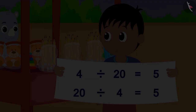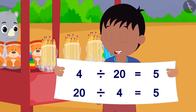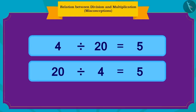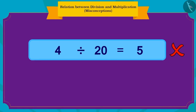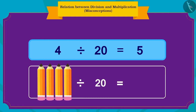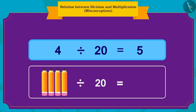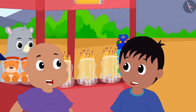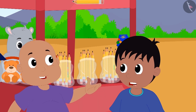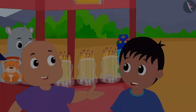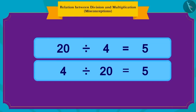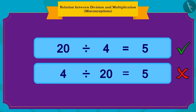After writing division in two ways, Raju happily told Bablu that he had become an expert in maths. Children, is the division written by Raju correct? No! What Raju has written is wrong. But why is it wrong? Because here Raju is dividing four pencils by 20 rupees, and is this even possible? Not at all. Bablu explained to Raju that even though division and multiplication have a relationship, we cannot write division sums by simply changing the places of numbers, the way we do for multiplication.